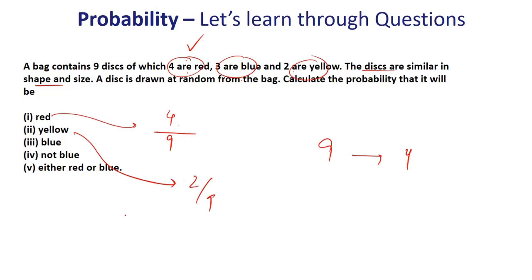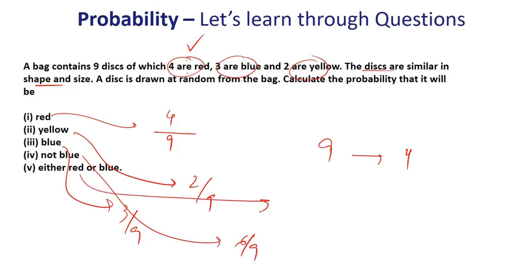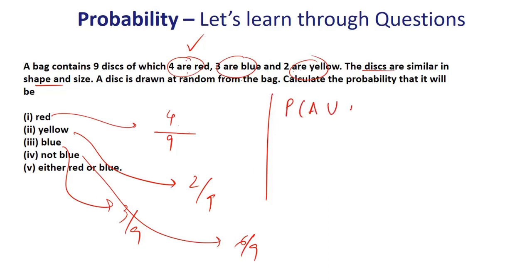Either red or blue — this introduces an important theory. Probability of A union B means either A or B, and it equals probability of A plus probability of B minus probability of A intersection B. Using a Venn diagram: A union B covers both sets entirely; we subtract the intersection because it is counted twice when taking both A and B.